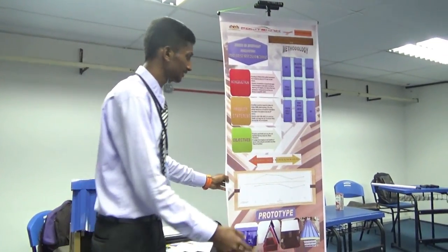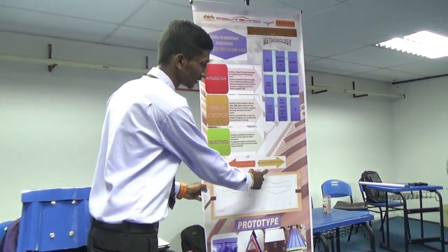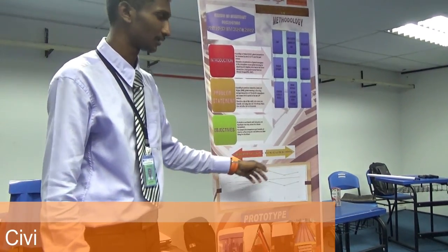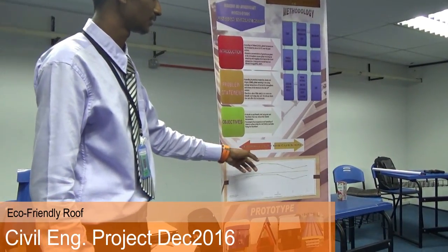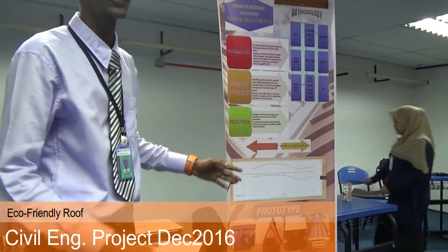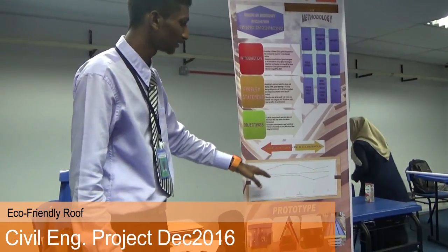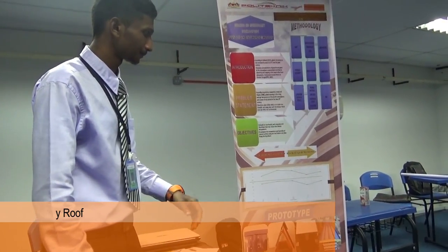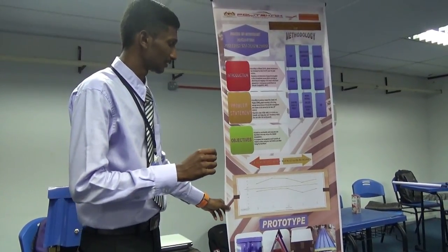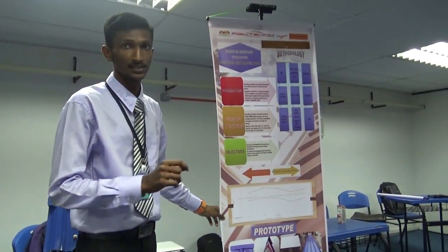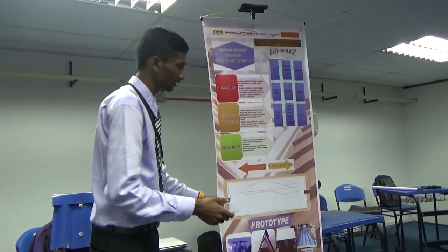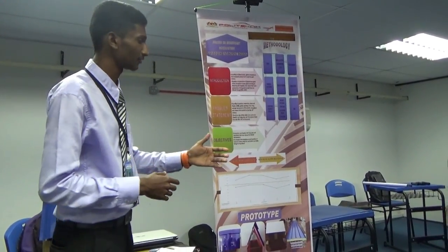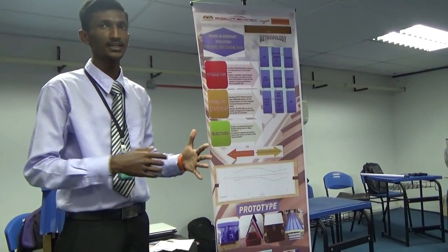This is the result. The top graph shows the zinc roof without styrofoam — it has a higher temperature. The bottom graph shows the zinc roof with styrofoam, which has lower temperature. The temperature difference is not large — around 2 to 5 degrees Celsius only — but it does help to reduce the temperature. By using styrofoam, it can reduce the interior temperature.